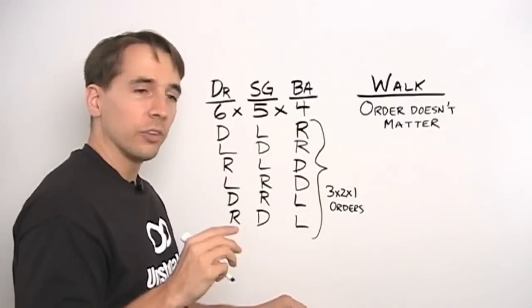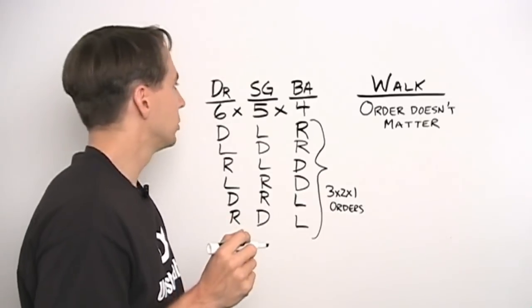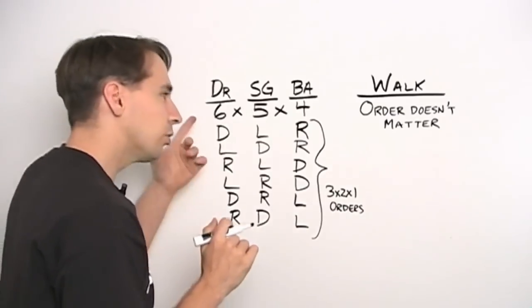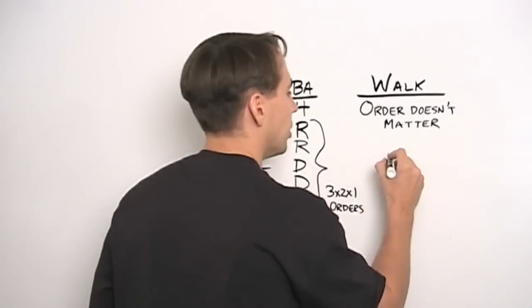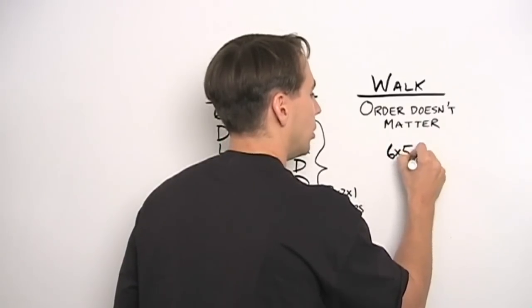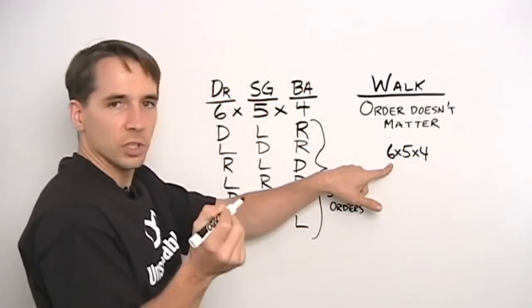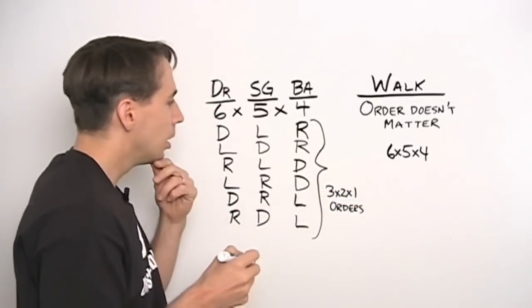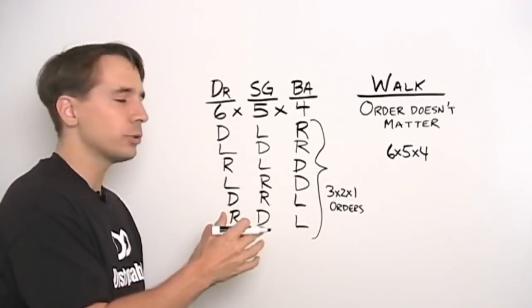Because once you've picked the three of us to put in the car, there are three ways to choose one of us to be the driver, and then there are two of us left to be in the shotgun seat, and then one in the back seat with the pizza, and I hope it's me. But over here when we're walking, the order doesn't matter. So when we start counting the number of ways we can pick three to send them to go get the pizza, well we can start off the same way as before, 6 times 5 times 4, and choose the first person, there are six ways to choose the first person, five ways to choose the second, four ways to choose the last, but the problem here is we're over counting.